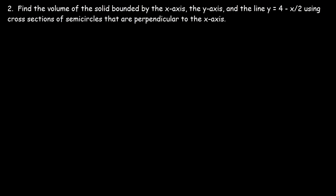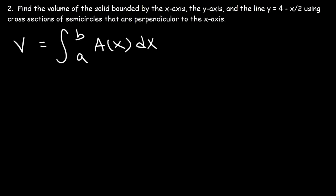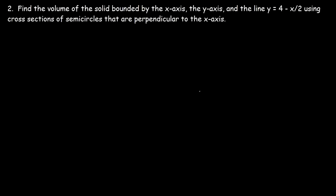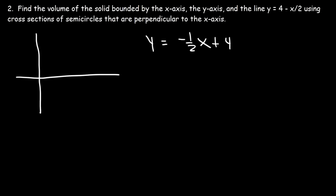Problem 2: Find the volume of the solid bounded by the x-axis, the y-axis, and the line y equals 4 minus x over 2, using cross sections of semicircles that are perpendicular to the x-axis. We can rewrite the line as negative one-half x plus 4, putting it in slope-intercept form, where the slope is negative one-half and the y-intercept is 4.